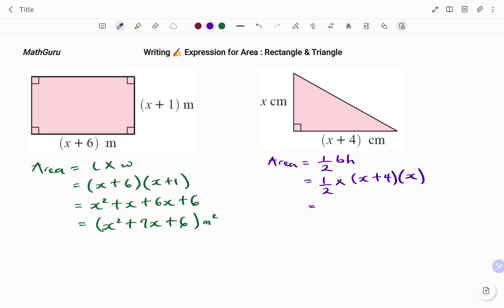I have my x multiplying the content of the brackets, so x times x, that's x squared. 4 times x, that's 4x. So I have plus 4x, all divided by 2, which is the half.